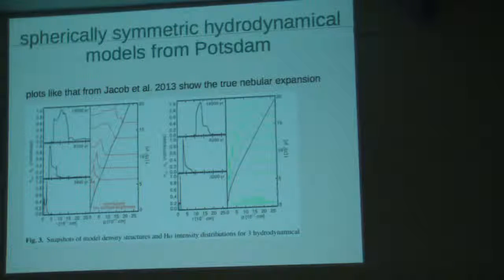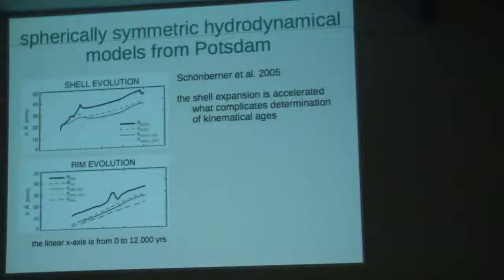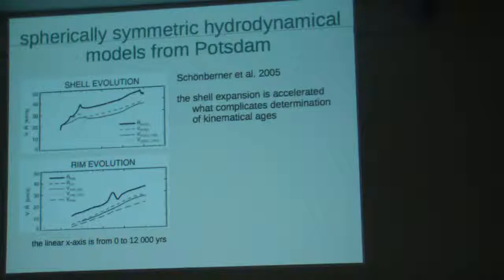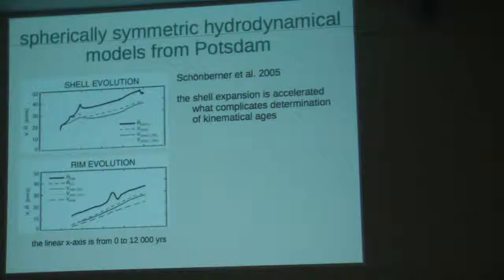This is one more example — exactly the same model as shown on the previous slide. This is the expansion evolution of the outer nebula radius, R-dot: the outer nebula radius derivative over time. It is increasing and changing acceleration. So the outer nebula radius in hydrodynamical models is always increasing, and the nebula is always accelerated — with different speed, but it is always accelerated. So people found the accelerations that you have heard about a few minutes ago. This kind of evolution is found in spherically symmetric hydrodynamical models.